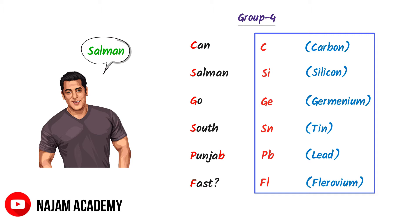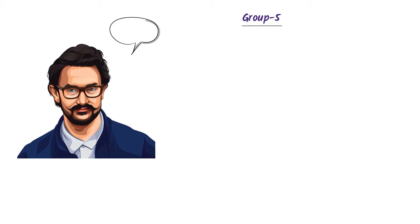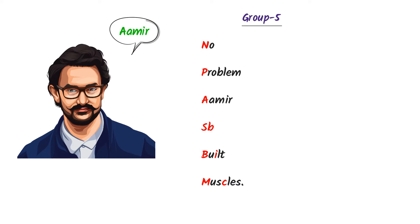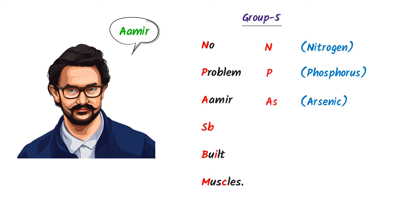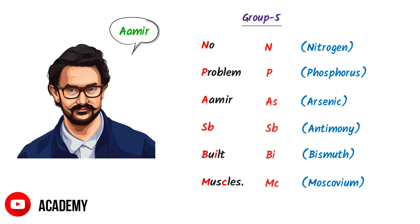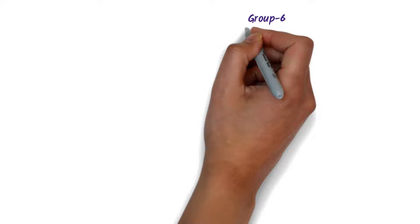Fifthly, consider Aamir Khan. We all know about the muscles of Aamir Khan. I say: no problem, Aamir Saab builds muscles. Here, N stands for Nitrogen, P stands for Phosphorus, A stands for As — which is the symbol of Arsenic, S and B stands for Sb — which is the symbol of Antimony, B stands for Bi — Bismuth, M stands for Mc — Moscovium. Thus this is the fifth group of the periodic table.